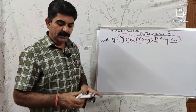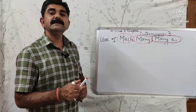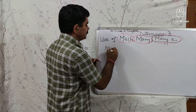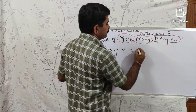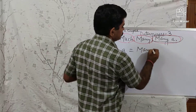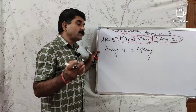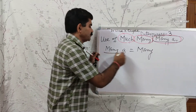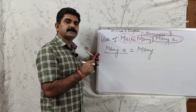Now what is 'many a'? Many a is equal to many, but you cannot use many in affirmative sentences — however, you can use many a in affirmative sentences. The difference is: when you use many, it is followed by a plural noun; but many a is followed by a singular noun and a singular verb.